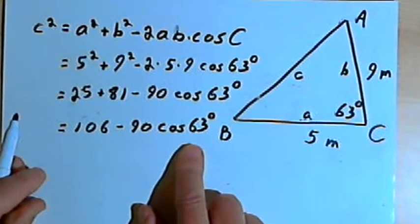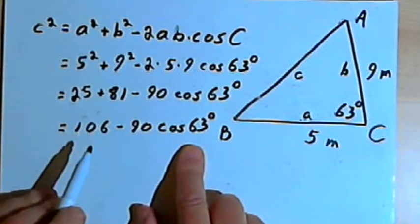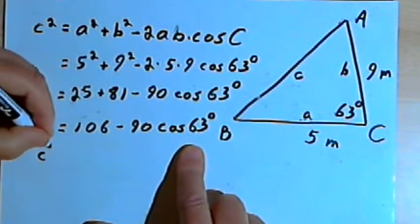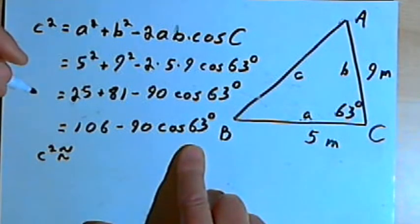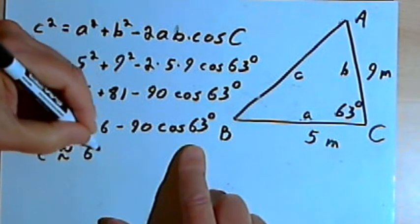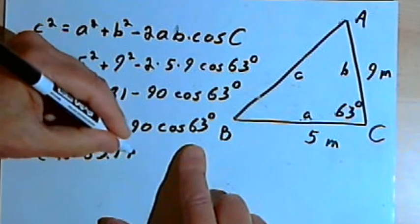So this is what you would put into the calculator. I've already done that, and what I've got is that c-squared equals approximately 65.14.